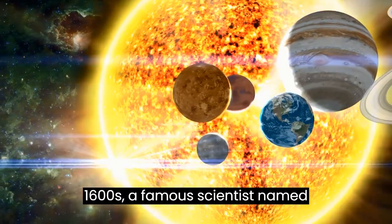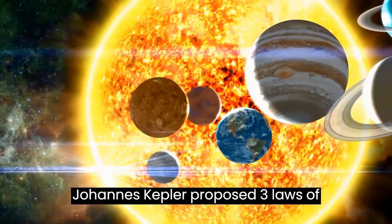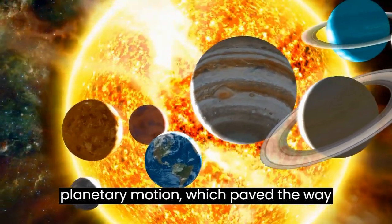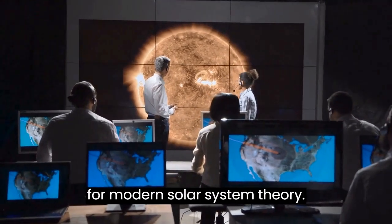But in the 1600s, a famous scientist named Johannes Kepler proposed three laws of planetary motion, which paved the way for modern solar system theory.